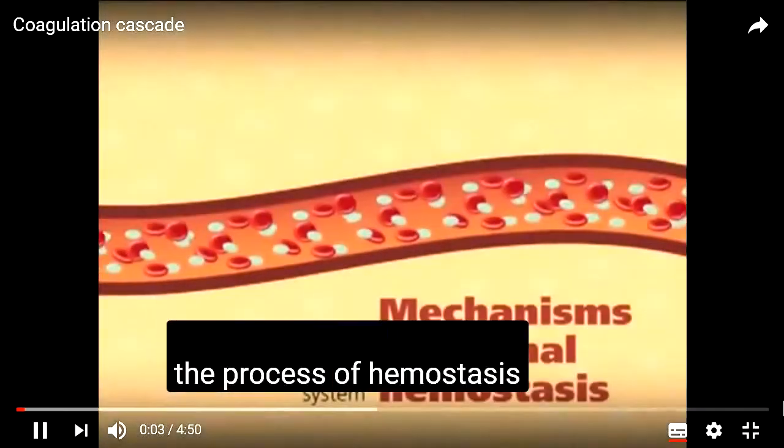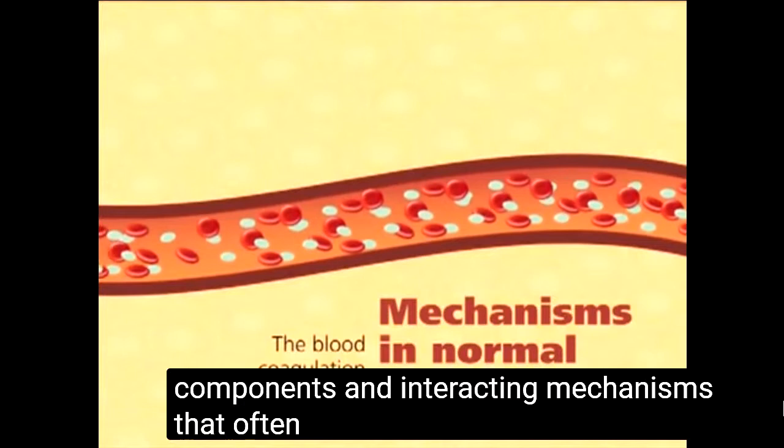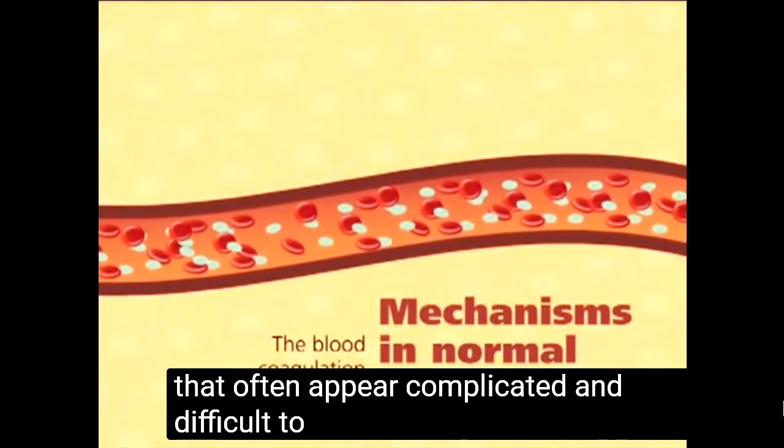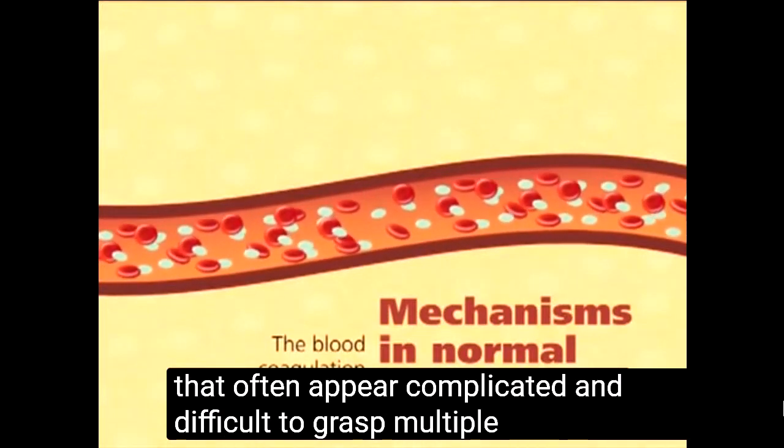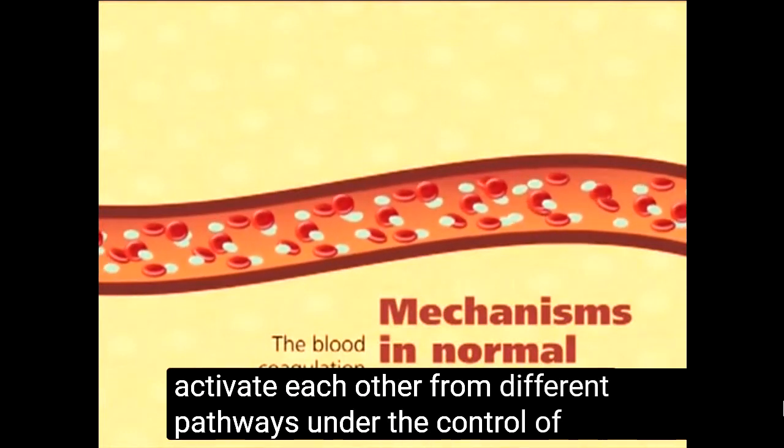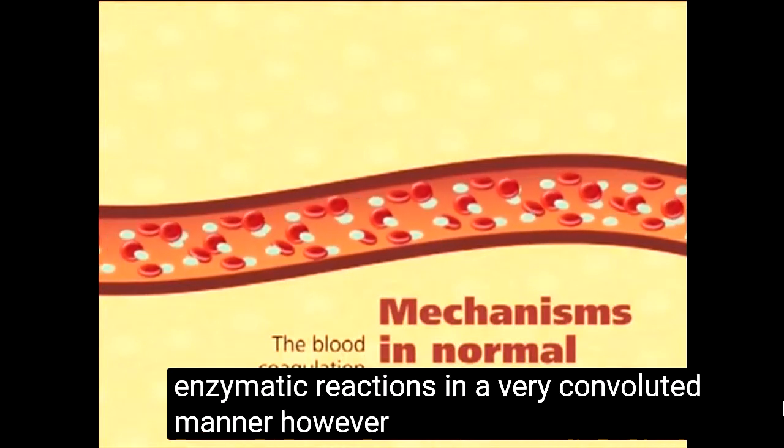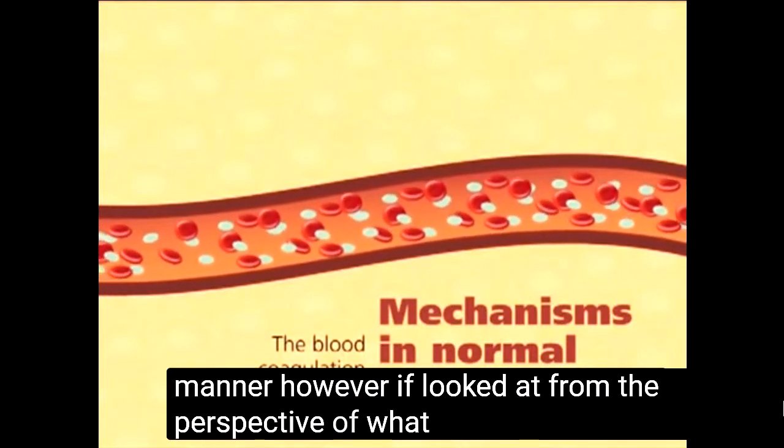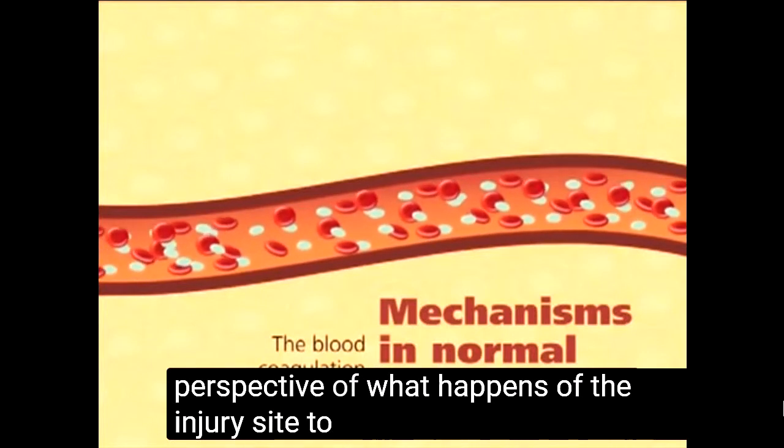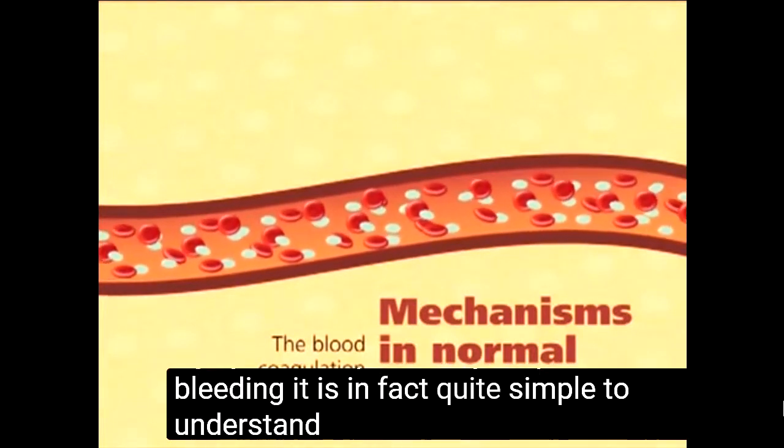The process of hemostasis has many components and interacting mechanisms that often appear complicated and difficult to grasp. Multiple factors activate each other from different pathways under the control of various enzymatic reactions in a very convoluted manner. However, if looked at from the perspective of what happens at the injury site to specifically stop bleeding, it is in fact quite simple to understand.